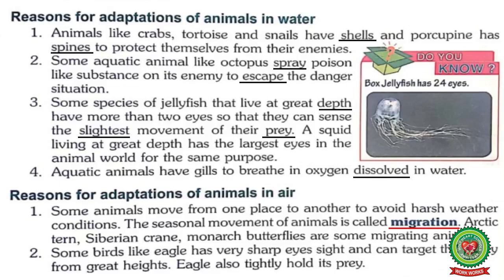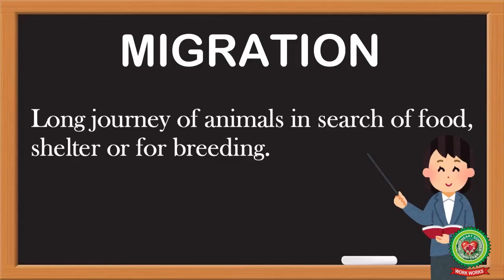Next: reasons for adaptation of animals in air. Some animals move from one place to another to avoid harsh weather, in order to protect themselves from harsh conditions. The seasonal movement of animals is called migration. Underline the word 'migration.' The definition of migration is: a long journey of animals in search of food, shelter, or for breeding.